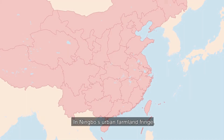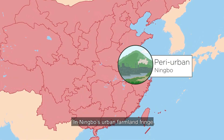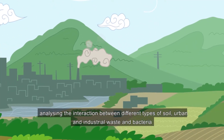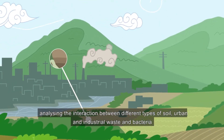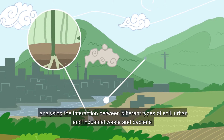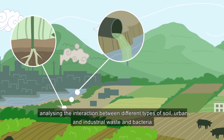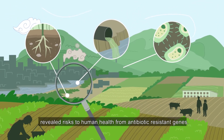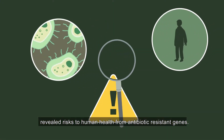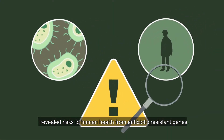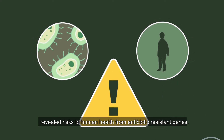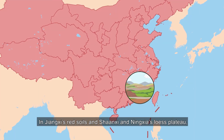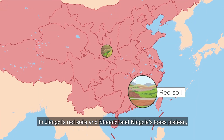In Ningbo's urban farmland fringe, analysing the interaction between different types of soil, urban and industrial waste, and bacteria revealed risks to human health from antibiotic-resistant genes.